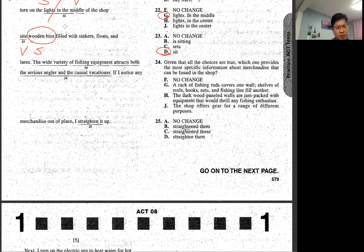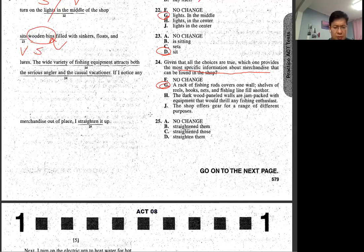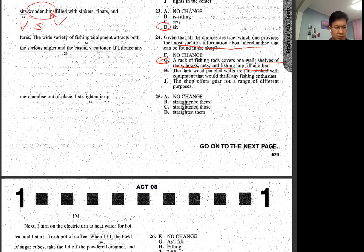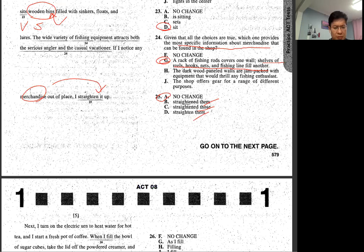This case they switch the subject and verb because that field has to modify the bin. So we can also show and provide more specific information about merchandise. More specific. Fishing can attract both the serious angler and casual vacationer. This is more specific about merchandise. So these are the ones that they're selling. If I notice any merchandise out of place, I straighten up. I straighten up, straighten it up. Merchandise, straighten it up. So merchandise itself is singular. It is the merchandise itself. So I think K is okay. Damn these, those, damn all the wrong because those are not plural. The merchandise itself is similar.